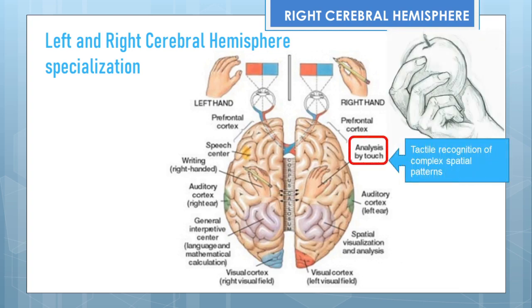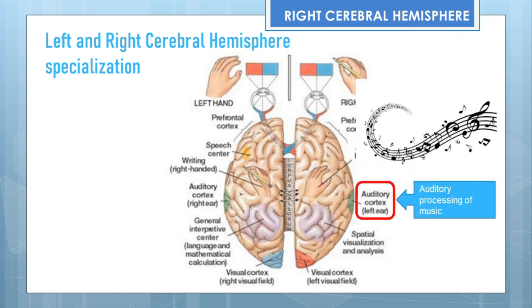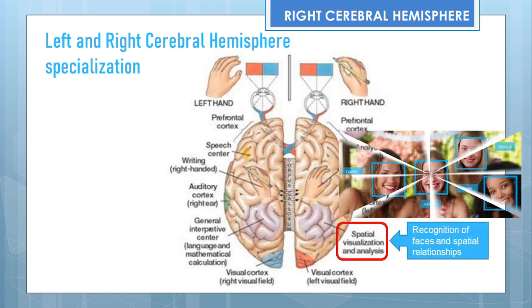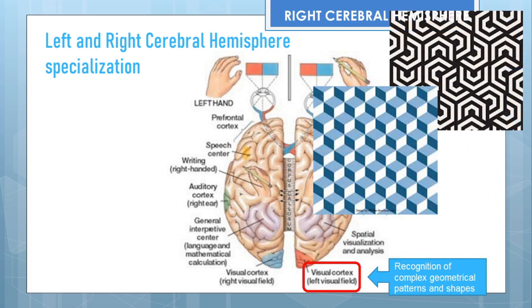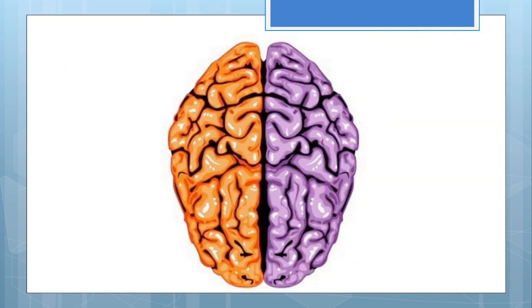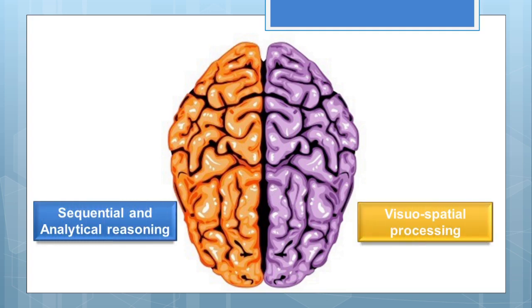Coming to the right cerebral hemisphere: tactile recognition of complex spatial patterns, or recognition of objects by touch, is the function of the right cerebral hemisphere. Auditory processing of music is also a function of the right hemisphere. Recognition of faces and spatial relationships, as well as visual analysis and recognition of complex geometrical patterns and shapes, are functions of the right cerebral hemisphere. We can see that the left hemisphere is functionally dominant with regard to sequential and analytical reasoning, whereas the right hemisphere is functionally dominant in visual-spatial processing.